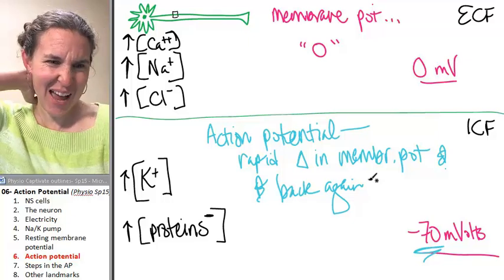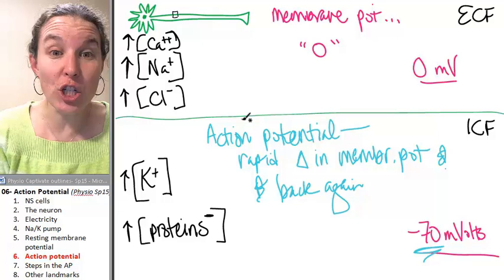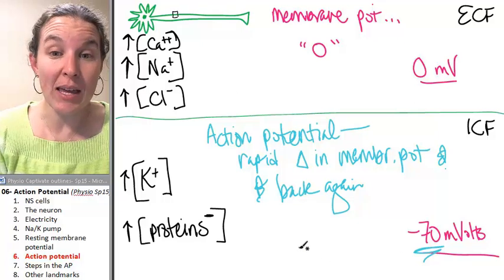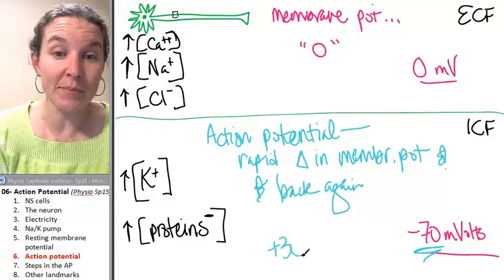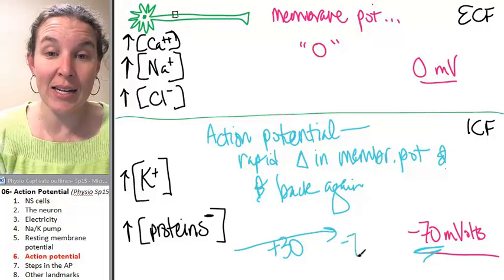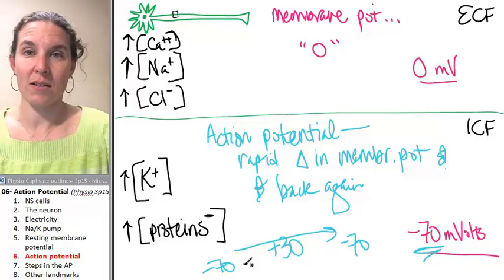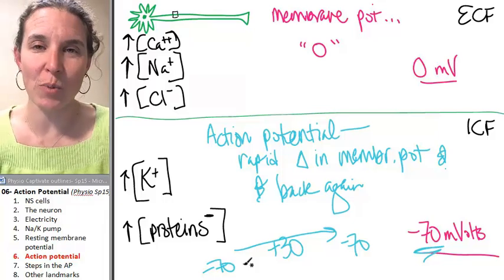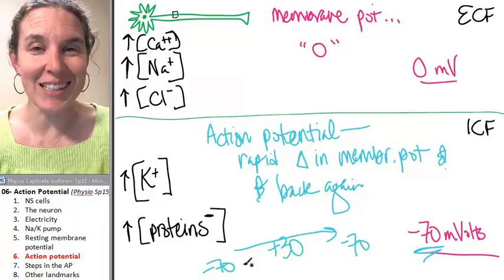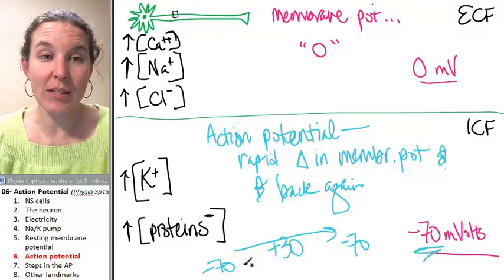How is that possible? But if you can, do you agree that if we could change this to make this positive 30, and it was like this big wave, and then it changed back to negative 70, do you agree that that's moving charged particles? And that's electricity? And that, my friends, is the action potential. That's it.